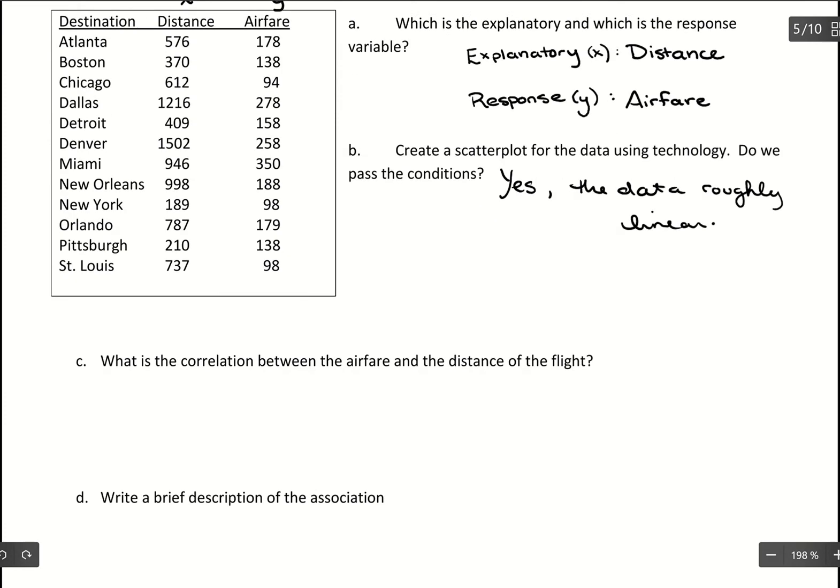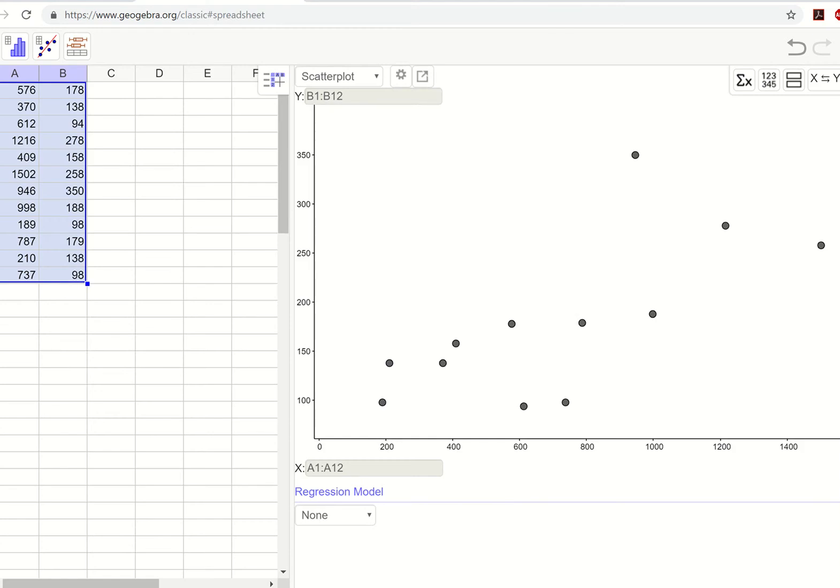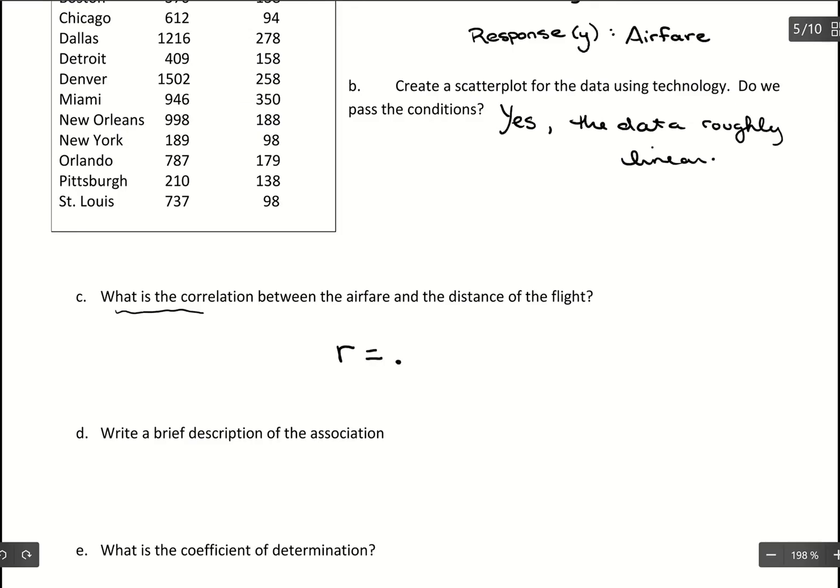So then we go on and figure out what is the correlation between the airfare and the distance of the flight. So if they just want to know what is the correlation, we just want to find what is R. So with that in GeoGebra, we would just click our summation x symbol in that upper right hand corner. And that should open up our statistics. And we just want to grab this value for R, which is 0.6953.